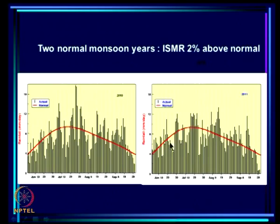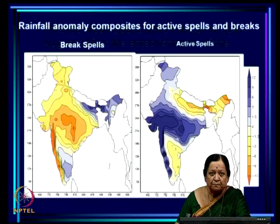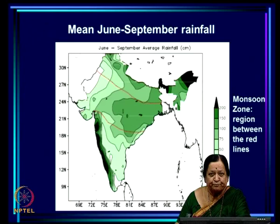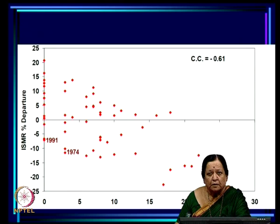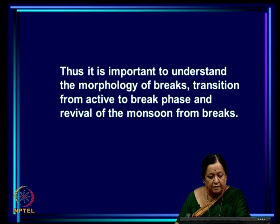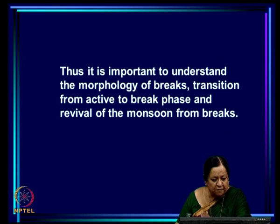Even if the final aim is only to understand inter-annual variation of all India summer monsoon, it is important to understand breaks because of the one-to-one correspondence between very long breaks and droughts. We must understand the morphology of breaks — their structure, rainfall patterns, transitions from active to break phase, and revival of the monsoon from breaks. How do these transitions occur and what mechanisms drive them? Only by understanding the mechanisms can we model and predict them. These are all facets we will examine in detail when studying intra-seasonal variation.